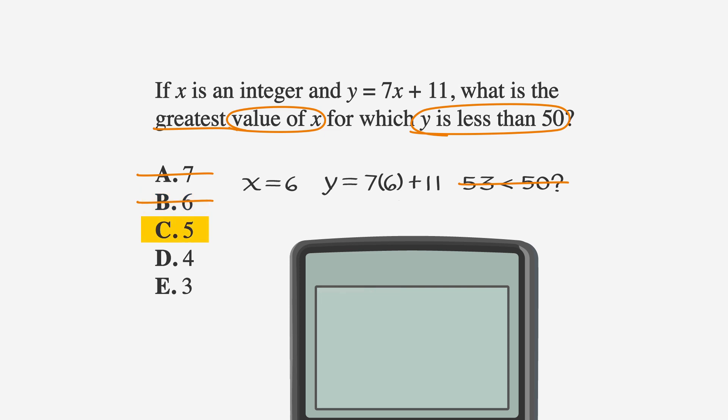Let's plug in 5, which is answer choice C for x. That way we get 7 times 5 plus 11. And again, if we enter this into our handy dandy calculator, it will tell us that this equals 47. Bingo.